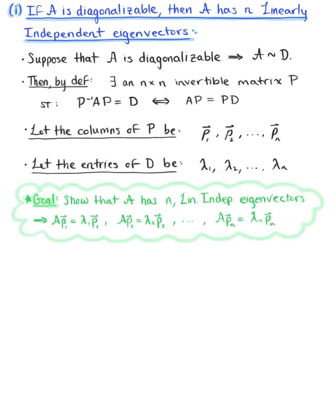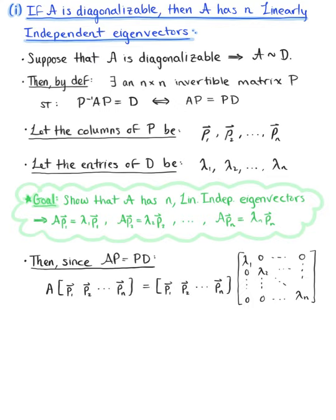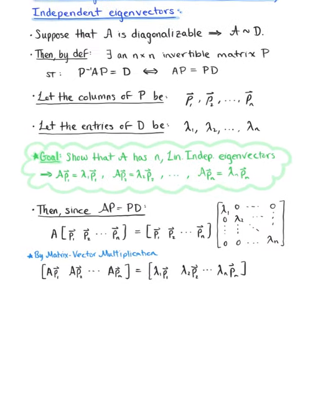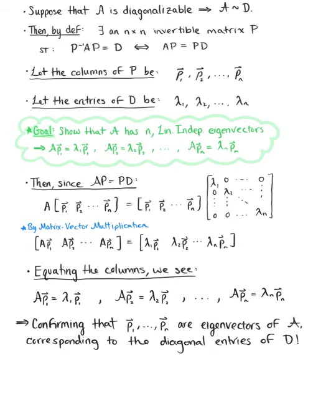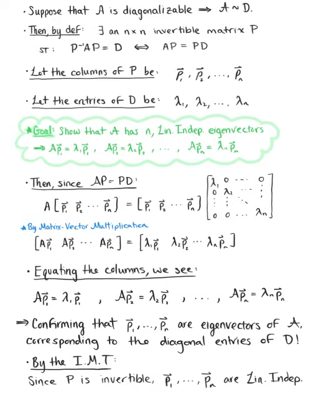So our goal is to now show that this implies matrix A has n linearly independent eigenvectors. Using the fact that matrix A times matrix P is equal to matrix P times matrix D, and then using matrix-vector multiplication, we can equate the columns and see that we end up with n eigenvalue problems by definition of an eigenvector, which confirms that vectors P sub 1 through P sub n are the eigenvectors of matrix A corresponding to the diagonal entries of matrix D. And by the invertible matrix theorem, since P is invertible, the vectors P sub 1 through P sub n are linearly independent, which is exactly what we were looking for.